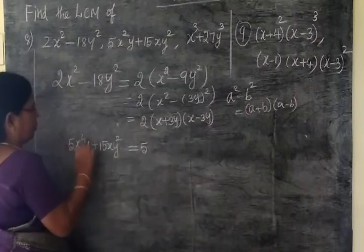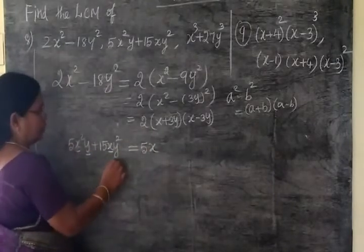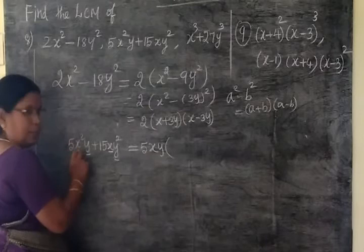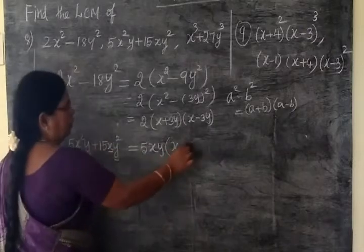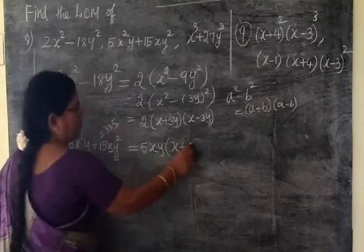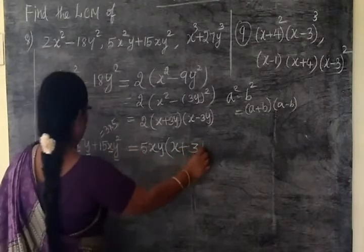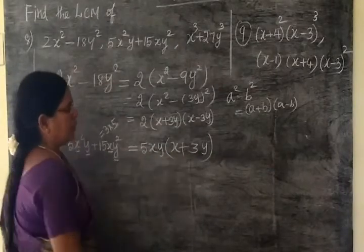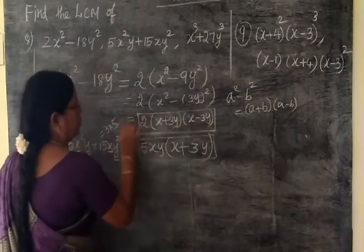This is the same way. We will take x outside. 5 is very original. 3 and 1s has taken outside and you are having y. 1s and 1y is very original. Means x + 3y. So these are the factors.